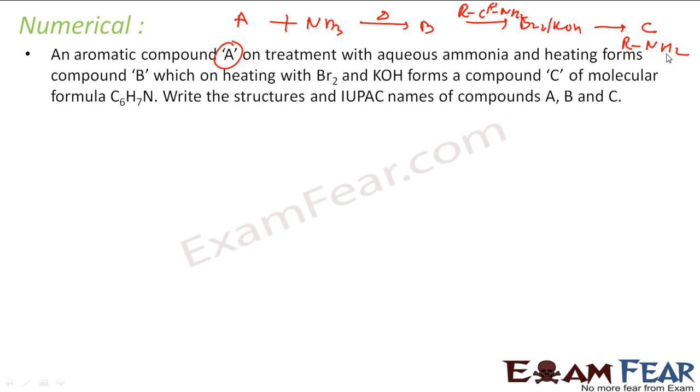C is my amine with formula C6H7N and there's a benzene ring also. This is C6H5 - what you're left with is NH2. This is the only possible formula of C. If this is C, then B will be this with CO extra. This is my B, because on this if you do Hoffmann bromide degradation you get C.